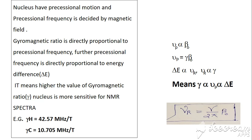For example, for hydrogen the gyromagnetic ratio is equal to 42.57 MHz per tesla, and for carbon-13 the gyromagnetic ratio is equal to 10.705 MHz per tesla. Through the gyromagnetic ratio it is explained why proton NMR spectroscopy is very useful for NMR spectroscopy.